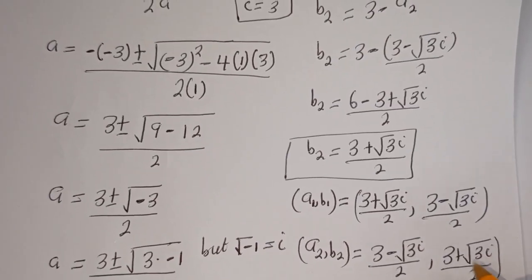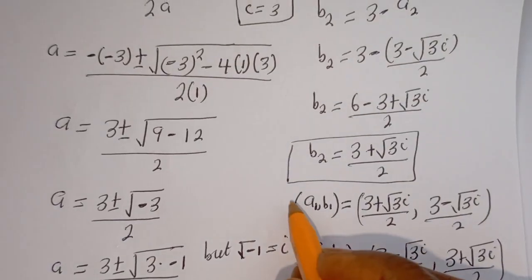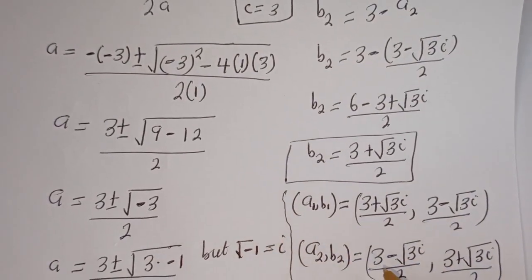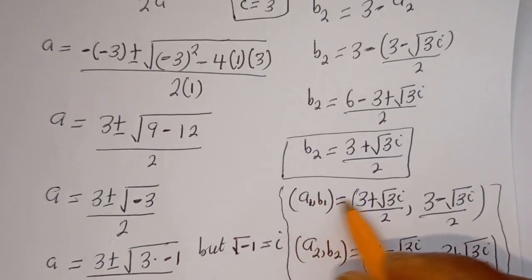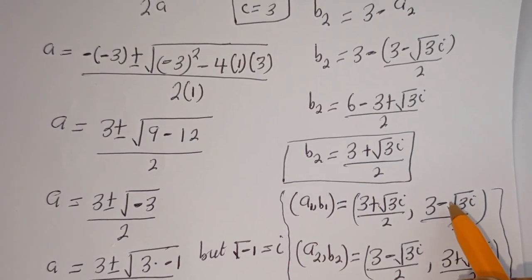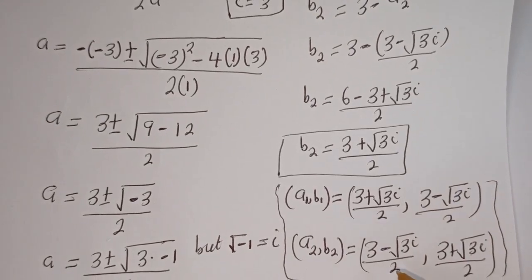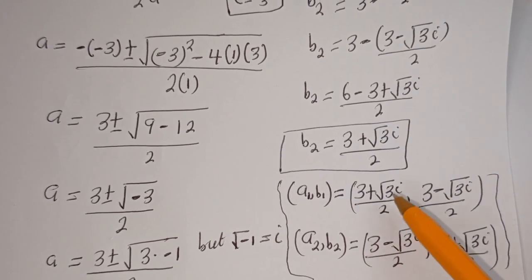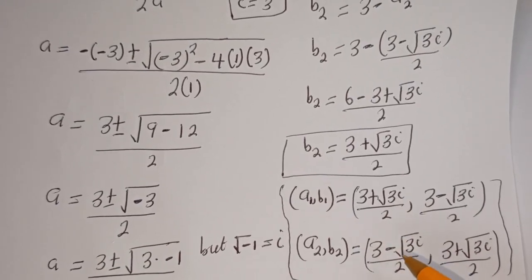Therefore our final answer: (A₁, B₁) equals ((3 + √3·i)/2, (3 − √3·i)/2), and (A₂, B₂) equals ((3 − √3·i)/2, (3 + √3·i)/2). You can see that A₁ equals B₂ and B₁ equals A₂. I hope you enjoyed the video — thank you for watching. Please don't forget to like, share, comment, and subscribe to my channel. Bye!